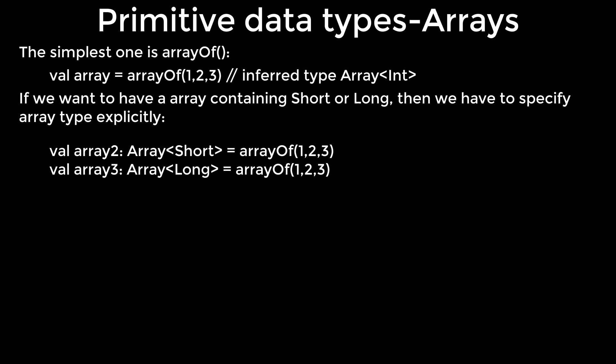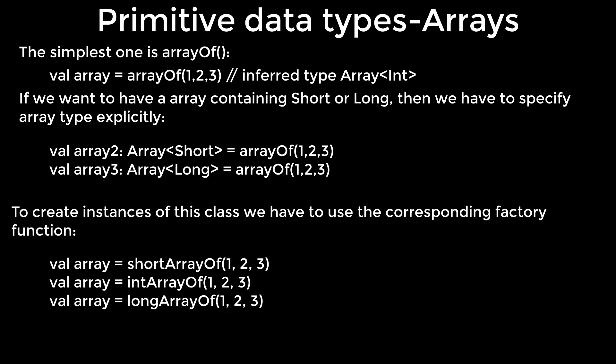As previously mentioned, using boxed representations may decrease application performance. That's why Kotlin has a few specialized classes representing arrays of primitive types to reduce boxing memory overhead: ShortArray, IntArray, LongArray, and so on. These classes have no inheritance relation to the array class, although they have the same set of methods and properties. To create instances of this class we have to use the corresponding factory function.